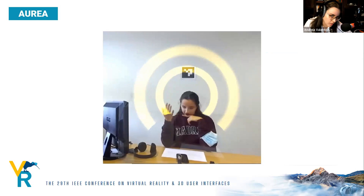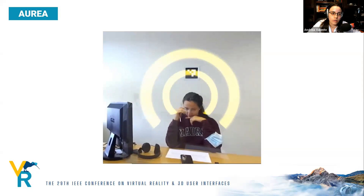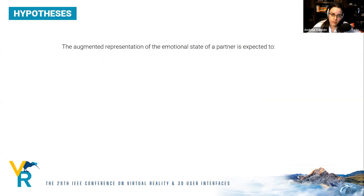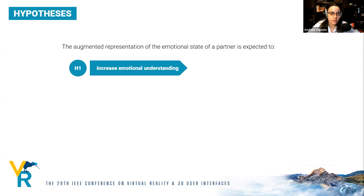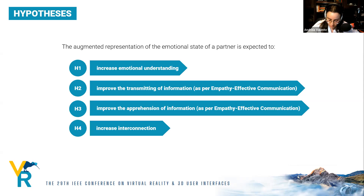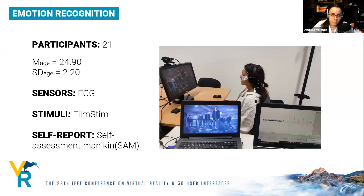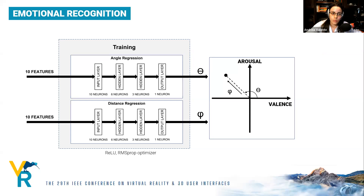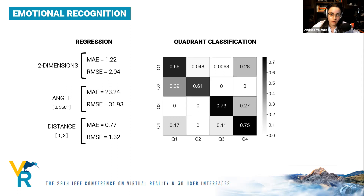We wanted to study the correlation between communication effectiveness and emotional understanding. We designed an emotional sharing system for users in the same physical space to facilitate emotional understanding. Our hypotheses were that the augmented representation of a partner's emotional state would increase emotional understanding, improve information transmission, improve information apprehension, and increase interconnection. We built an emotion recognition model where 21 participants watched film clips from the FilmStim database while connected to ECG sensors, then used self-reported metrics to train neural networks outputting a point on an arousal-valence graph. For a four-class format, we achieved almost 71% quadrant classification.